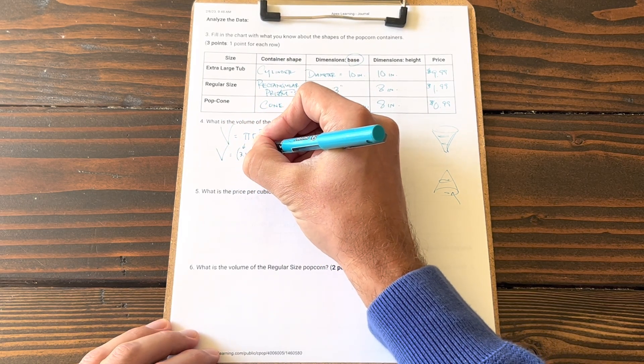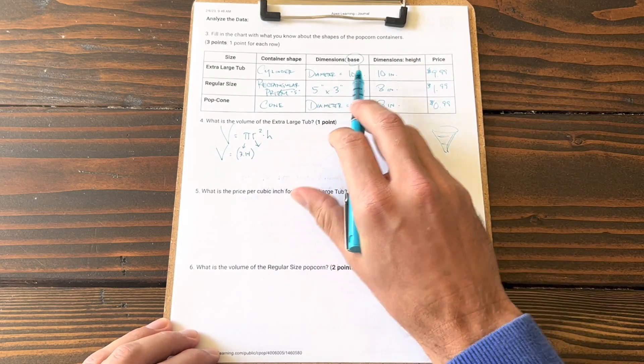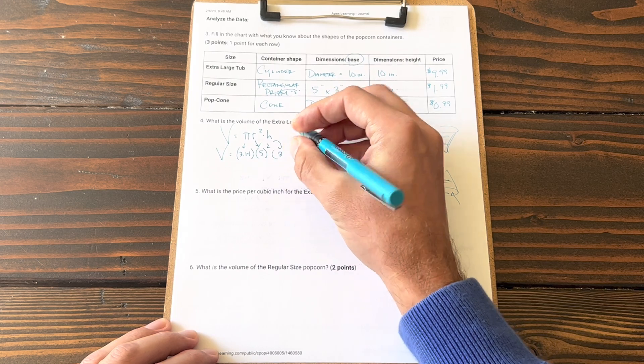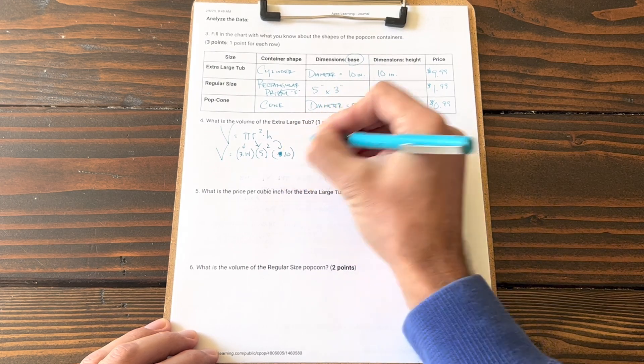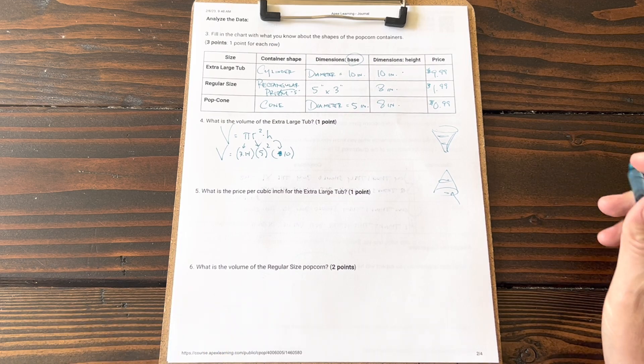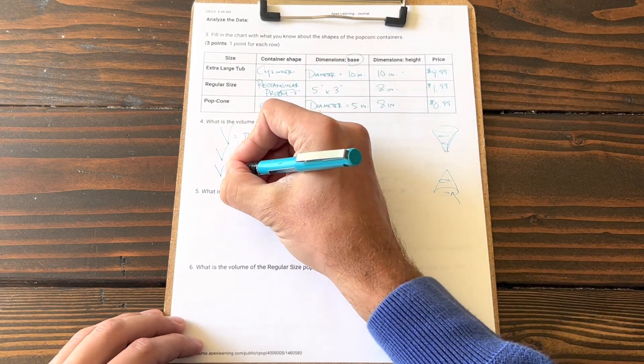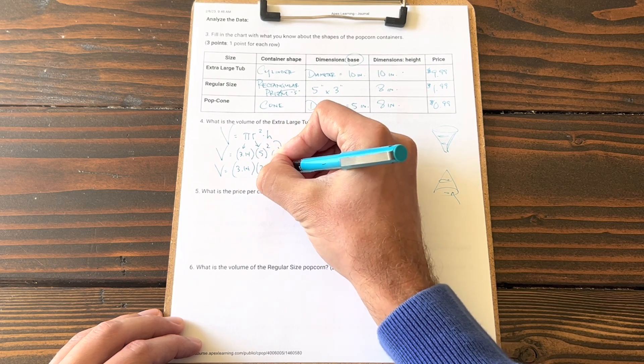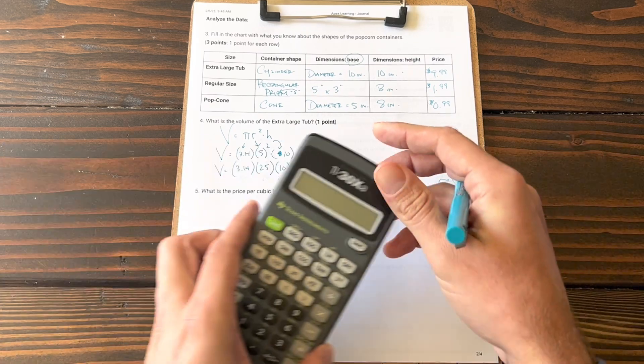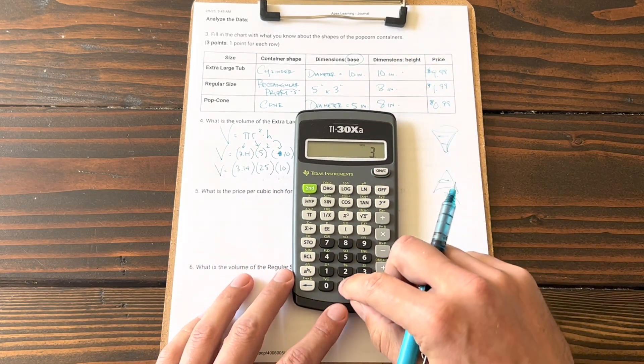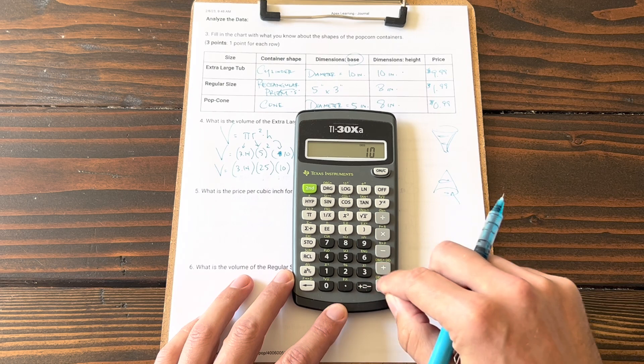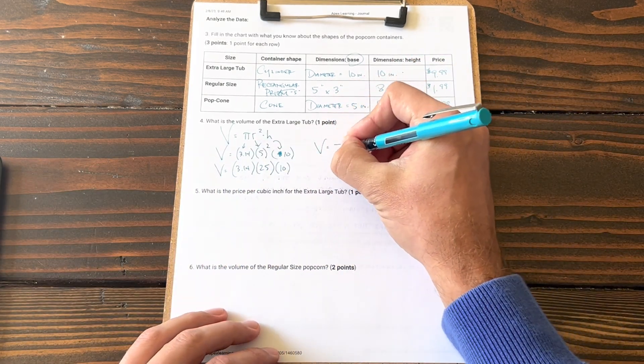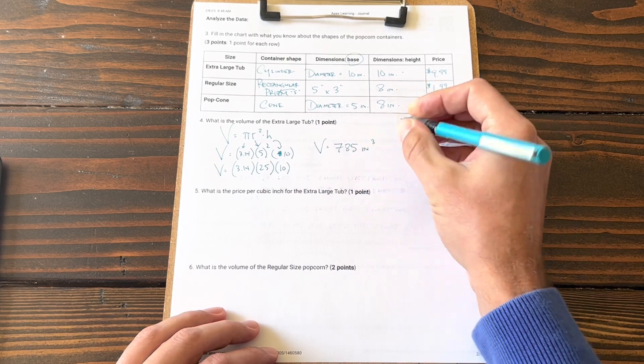Let's plug in our values. The volume is going to be π is 3.14, the radius—well if the diameter is 10, that means the radius is 5—squared, and the height is 10. One more step: I'm just going to square the 5. So we're going to have 3.14 times 25 times 10. Let's see what we end up with: 3.14 times 25 times 10 equals 785 inches cubed. Volume equals 785 inches cubed.